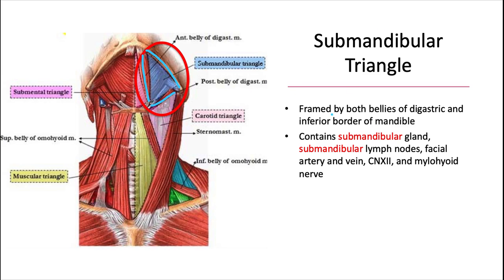This triangle contains the submandibular gland and the submandibular lymph nodes, sharing the same name underneath the mandible, as well as the facial artery and vein, cranial nerve 12, which is the hypoglossal nerve, and the mylohyoid nerve.